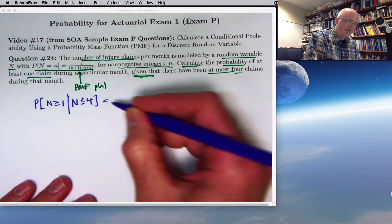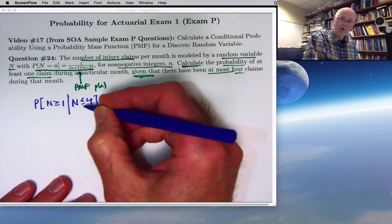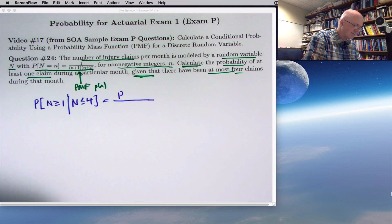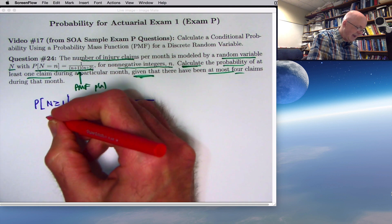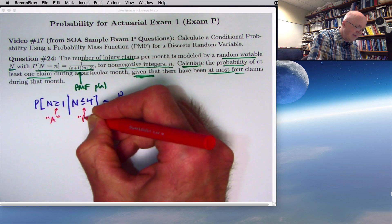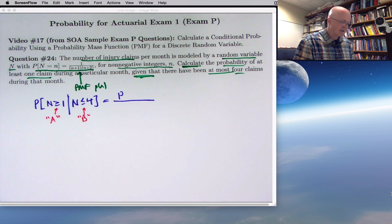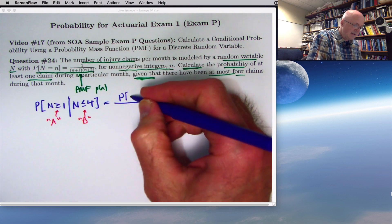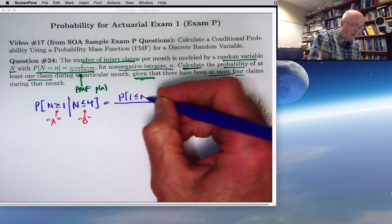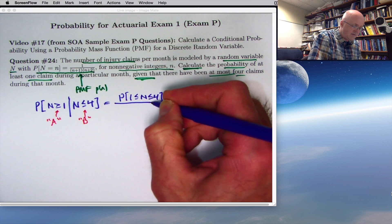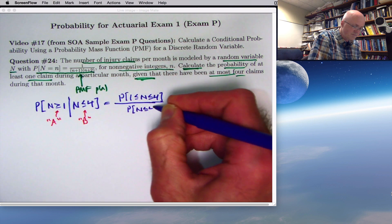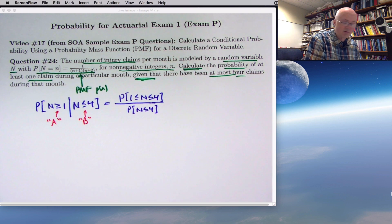So I want to go back to the definition of conditional probability. It's the probability of both of these events occurring. By the way, you could think of this as being your typical A, if you like, and this is your typical B. But, again, I'm not thinking of them as being subsets unnecessarily. It's the probability of both occurring. In this case, that means N is between 1 and 4, divided by the probability that B occurs, divided by the probability that N is less than or equal to 4, between 0 and 4, in this case.